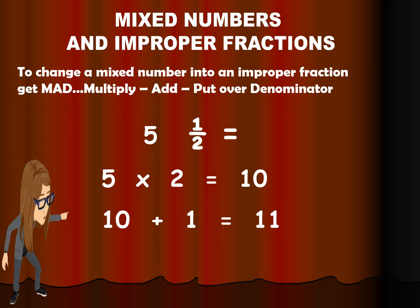Okay class, to change mixed number into improper fraction, we have to get MAD. What is MAD? It means you multiply, then add, and then put over denominator. So in this example, we have 5 and 1 half.